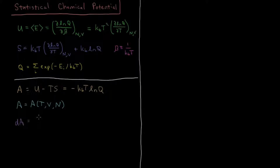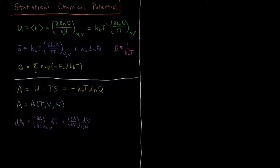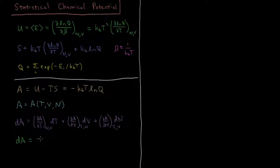We have dA equals (∂A/∂T) at constant N and V times dT, plus (∂A/∂V) at constant T and N times dV, plus (∂A/∂N) at constant T and V times dN, the number of particles. We also know that the total differential of the Helmholtz energy dA equals minus S dT minus P dV plus (∂A/∂N) at constant T and V times dN.